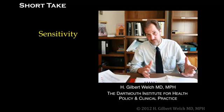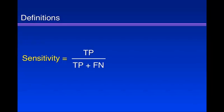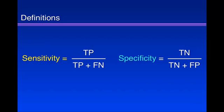Hi, I'm Gil Welch, and in this short take we're going to talk about sensitivity and specificity. Here are the definitions. Sensitivity equals the number of true positives over the number of true positives plus false negatives. Specificity equals the number of true negatives over the number of true negatives plus false positives.